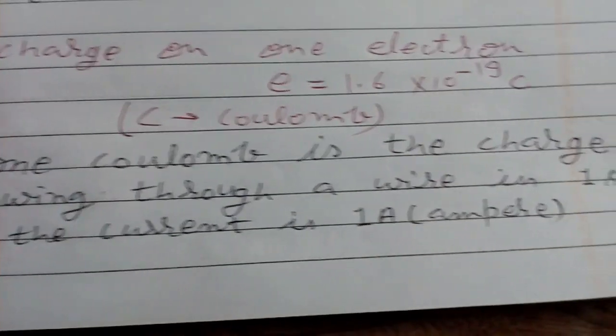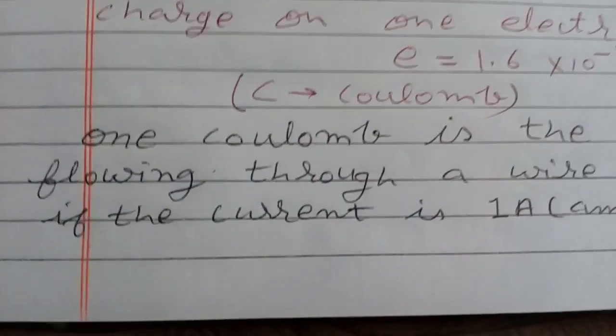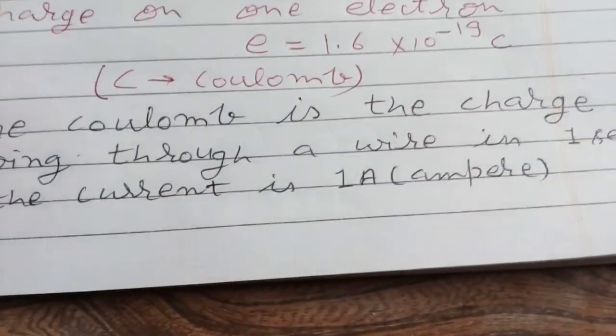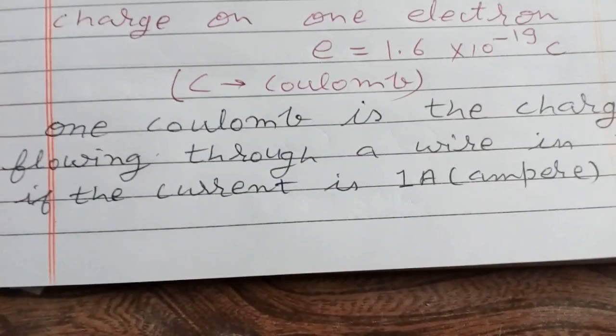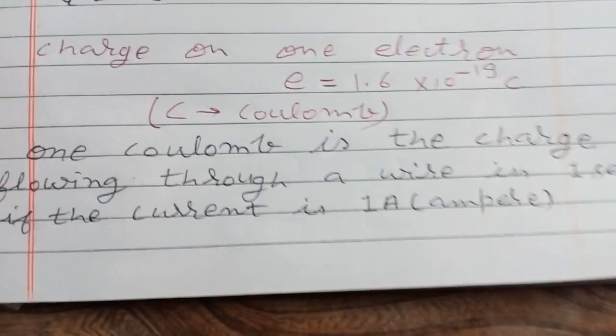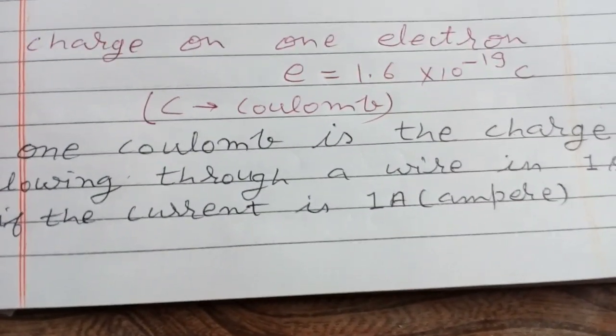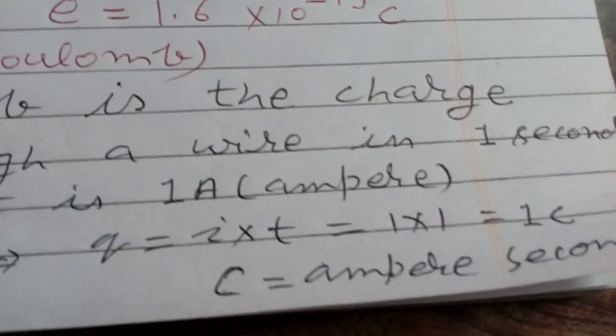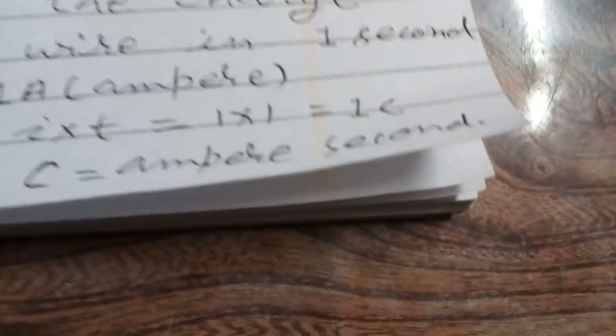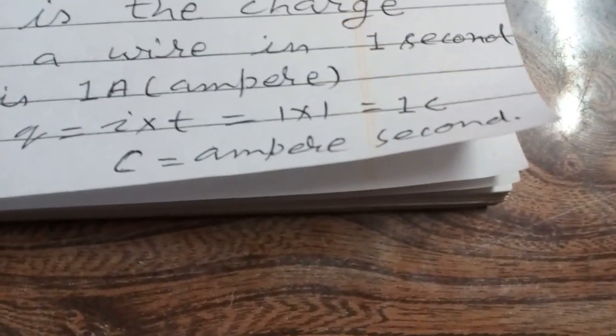One coulomb is the charge flowing through a wire in one second when the current is one ampere. So Q = one ampere × one second, and one ampere-second is known as one coulomb. This is the definition of one coulomb.